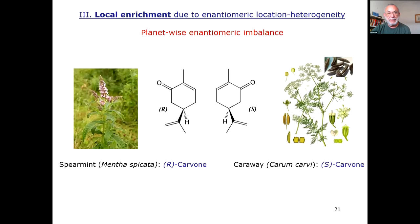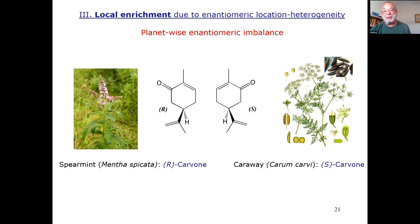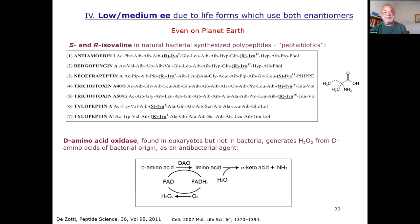The third parameter is local enrichment due to enantiomeric local-location heterogeneity. On planet Earth, for instance, the right-handed enantiomer of carvone is spearmint, and the left-handed enantiomer is caraway. If you are near a spearmint plant, you'll detect a very high enantiomeric excess of that one. If you are in a different geographical location with a forest of the other plant, you'll see something different. That is, enantiomeric excess may also be an issue of location and heterogeneity on the planet.